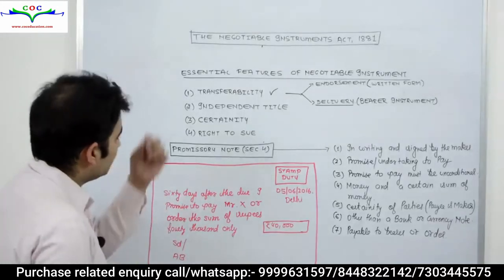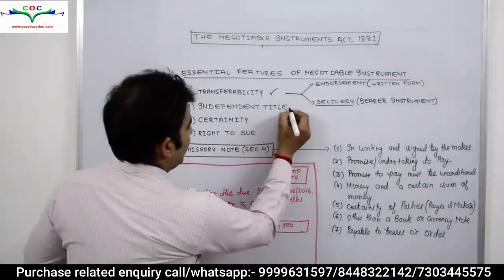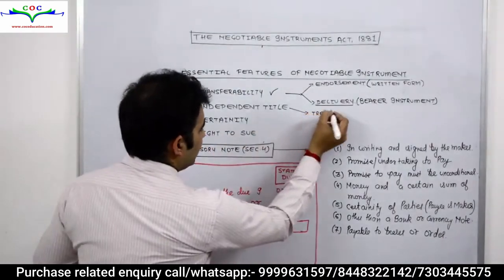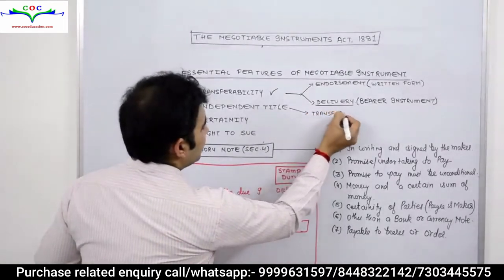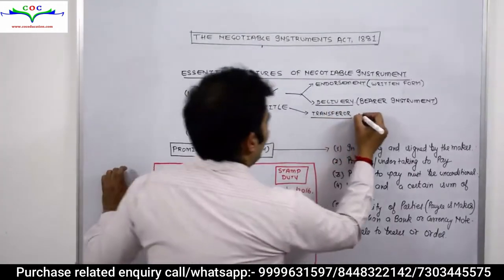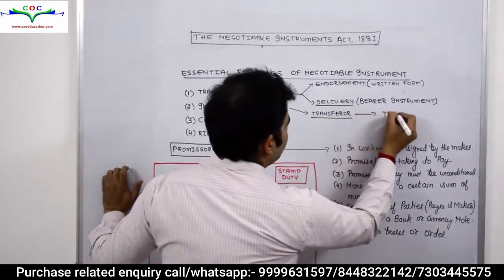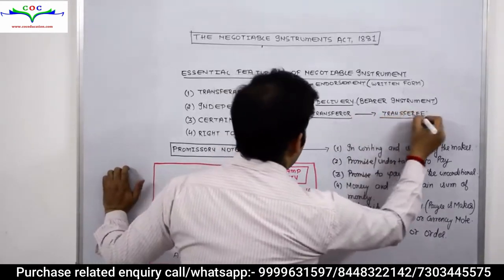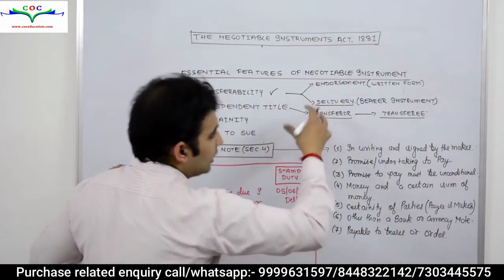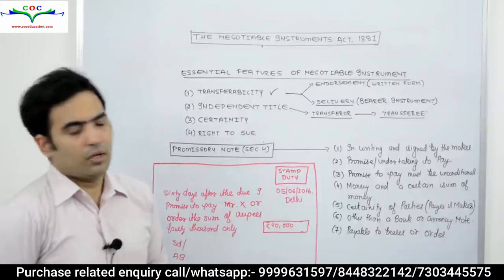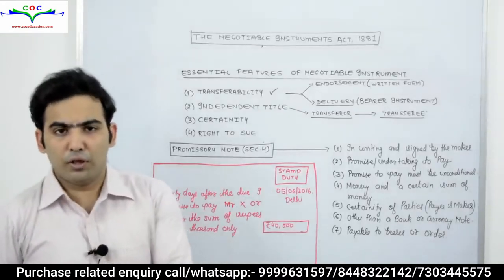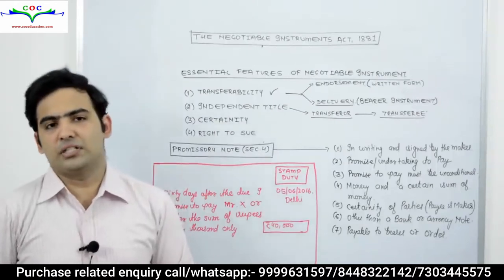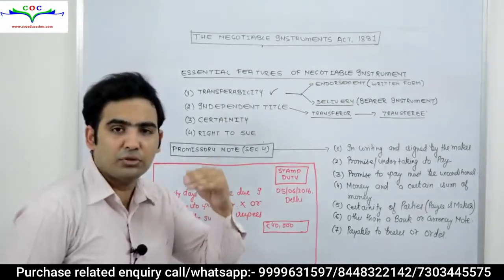अब दूसरा point आया — independent title। Independent title का मतलब होता है कि जो उस negotiable instrument को transfer करता है उसे हम कहते हैं transferor, और जिसके favor में transfer किया गया उसे हम कहते हैं transferee। इन दोनों का title या right बिल्कुल अलग-अलग होता है। For example, अगर Mr. X ने fraud करके एक negotiable instrument, जैसे bills of exchange, ले लिया और Mr. X ने उसे Mr. Y को transfer कर दिया।